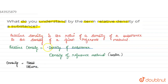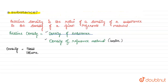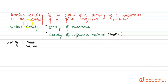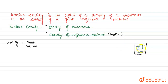So relative density is the ratio of the density of any given substance to the density of water. To understand how we can find relative density, suppose we have a bucket filled partially or fully with water and we place a substance in it.